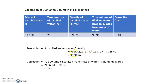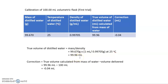Mass here is the mass of the distilled water divided by the density of the distilled water. Mass 99.67 divided by 0.99705, and you get the true volume of distilled water which is 99.96 ml.